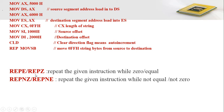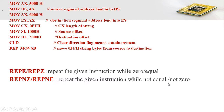Similarly, we have REPE or REPZ, which repeats the given instruction while the zero flag equals 1. The zero flag equal to 1 indicates the equal case, so here we need to consider both the CX value and the zero flag value. REPNE or REPNZ repeats while the zero flag equals 0, representing the not-equal or not-zero case. The repeat continues until CX becomes 0, also considering the zero flag value.